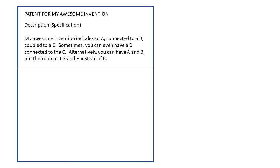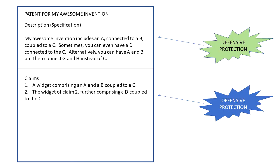So we have a couple of different embodiments for this invention: A, B, and C; sometimes we can have D, so A, B, C, D; alternatively we can have A, B, G, H with no C. Now let's look at the claims. Claim one is a widget comprising an A and a B coupled to a C. Claim two is a dependent claim — everything in claim one plus a D coupled to the C. These letters are just placeholders for whatever elements are part of your invention — nuts, bolts, brackets, etc.